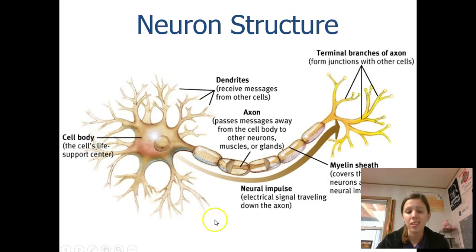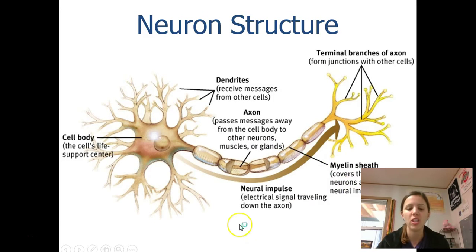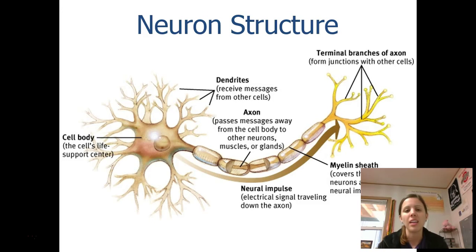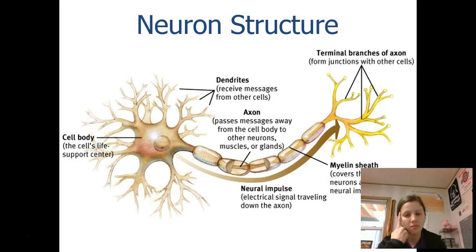The axon is covered by a substance called the myelin sheath, and the myelin sheath basically has two functions. The first is that it protects the axon, and the second is that it increases the speed at which the neural impulses travel down the neuron. So the faster the myelin sheath makes the axon, the faster the information that I stubbed my toe will reach my brain.